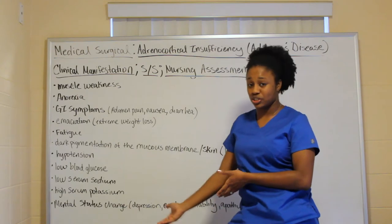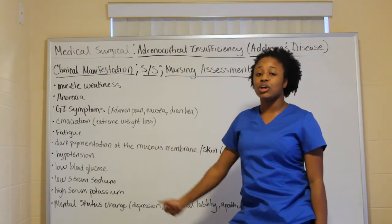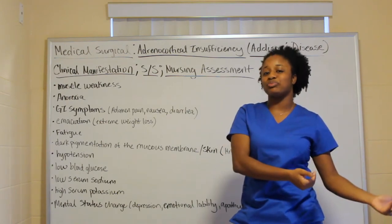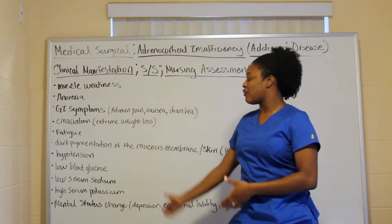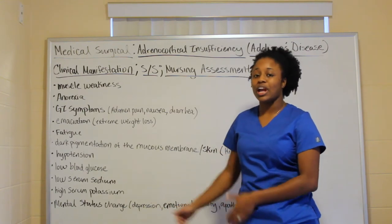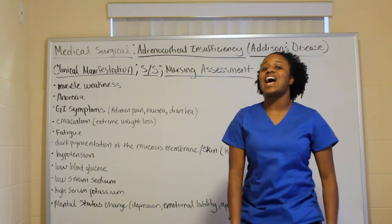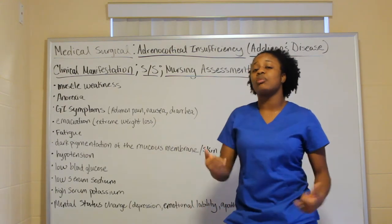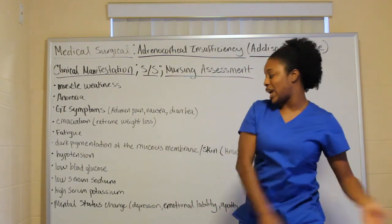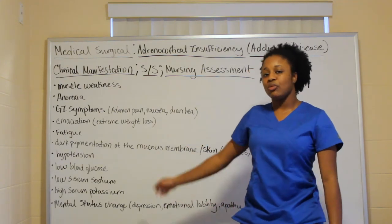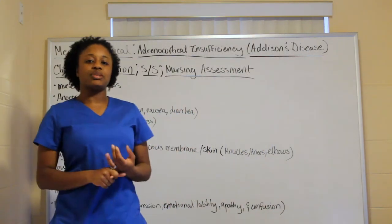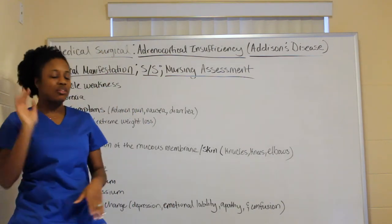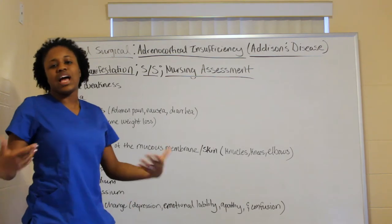Key lab differences: Addison's presents with hypotension, whereas Cushing's has hypertension. Addison's has low blood glucose, Cushing's has high blood glucose. In Addison's you have low sodium, while Cushing's has high sodium. Addison's has high potassium, Cushing's has low potassium.